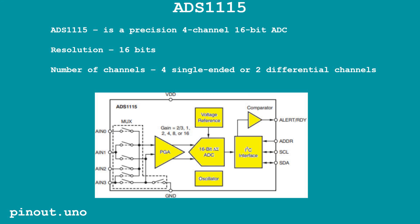The ADS1115 is a precision 4-channel 16-bit ADC with low power consumption. It has the following features: 16 bits providing high measurement accuracy. However, all 16 bits are utilized only in differential mode — I'll explain this further. As for the number of channels, it has 4 analog inputs which can be used as 4 single-ended channels or 2 differential channels.